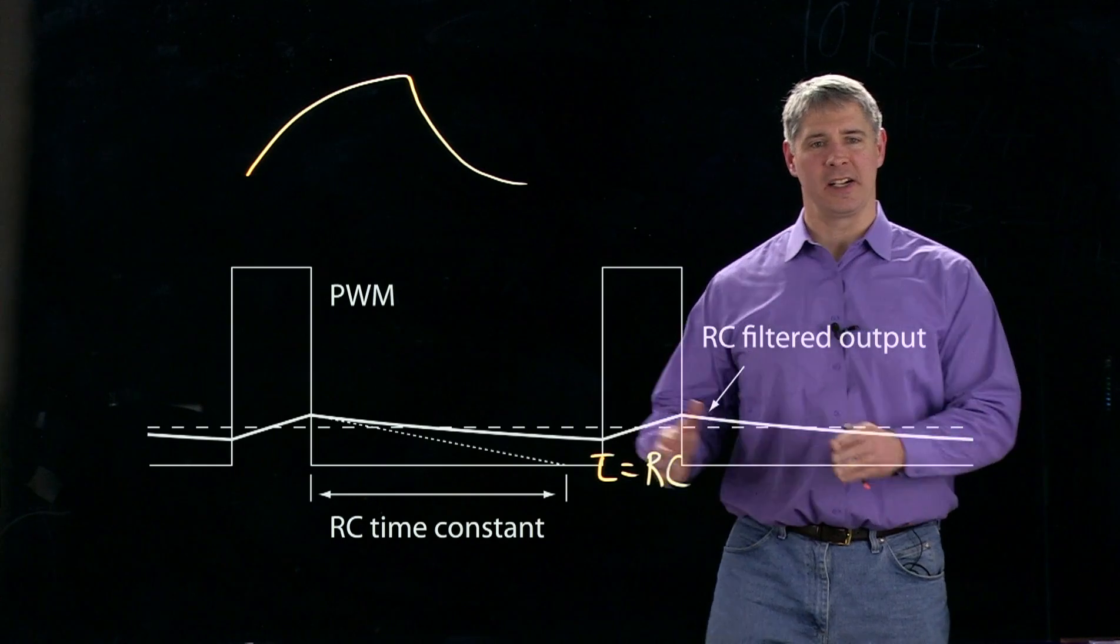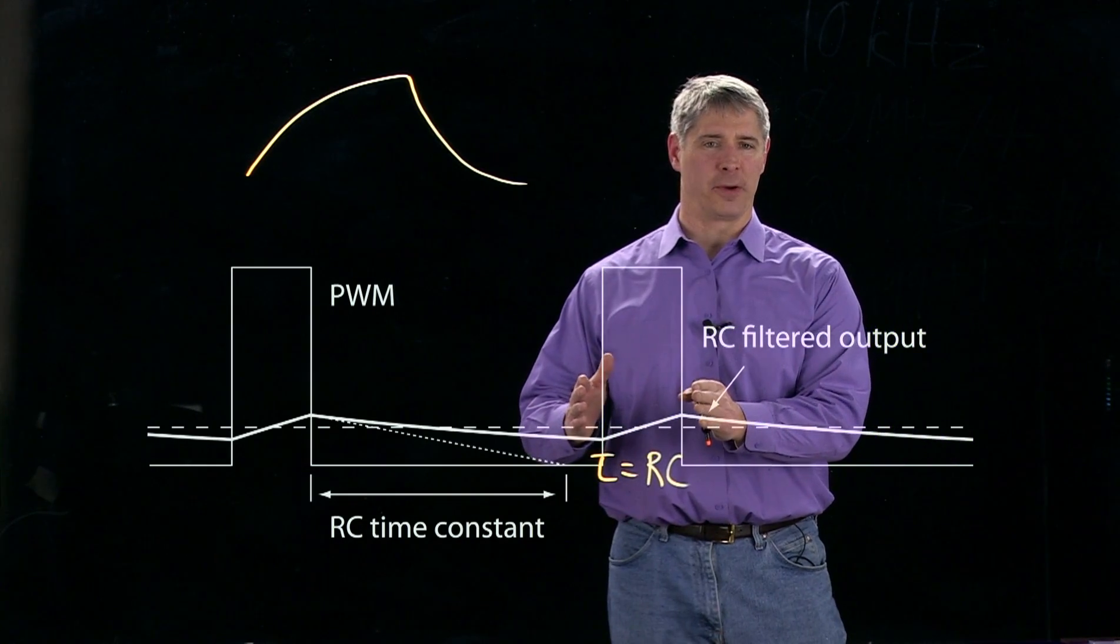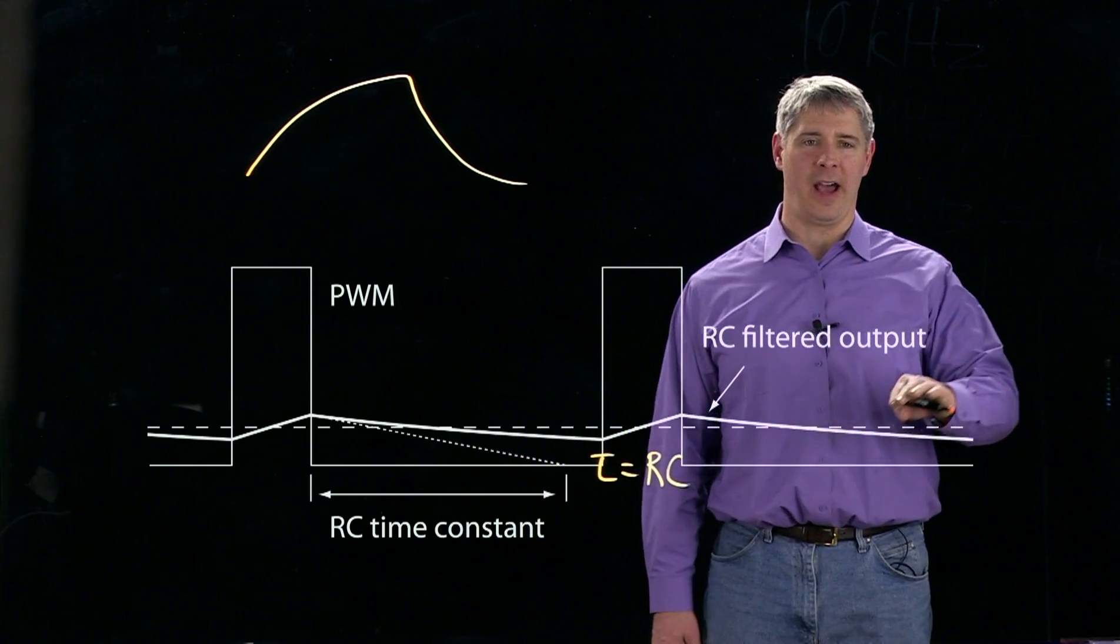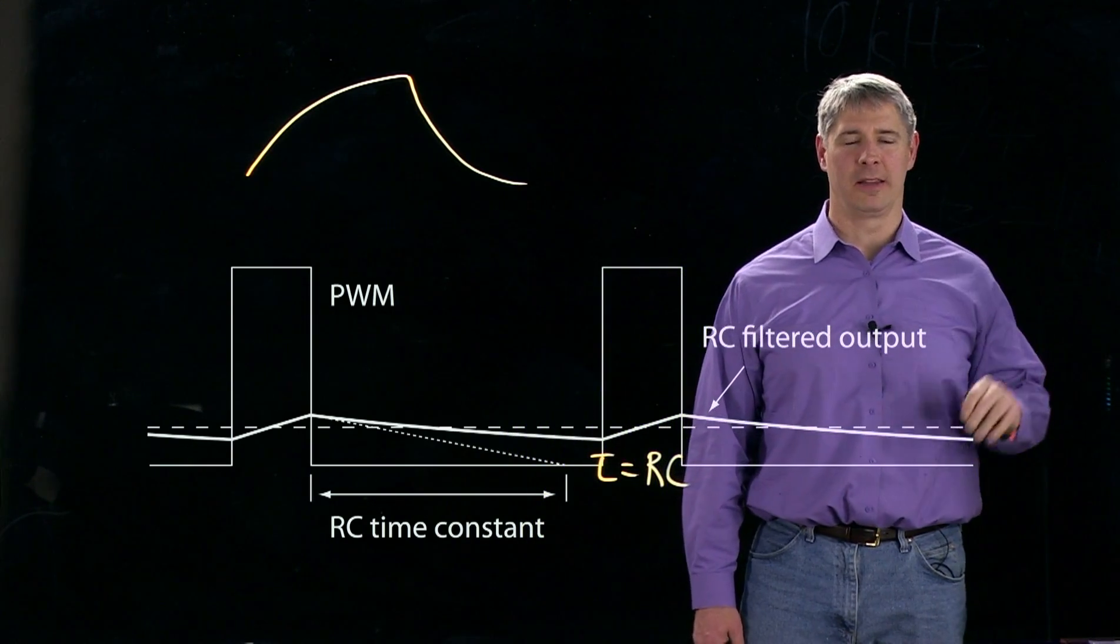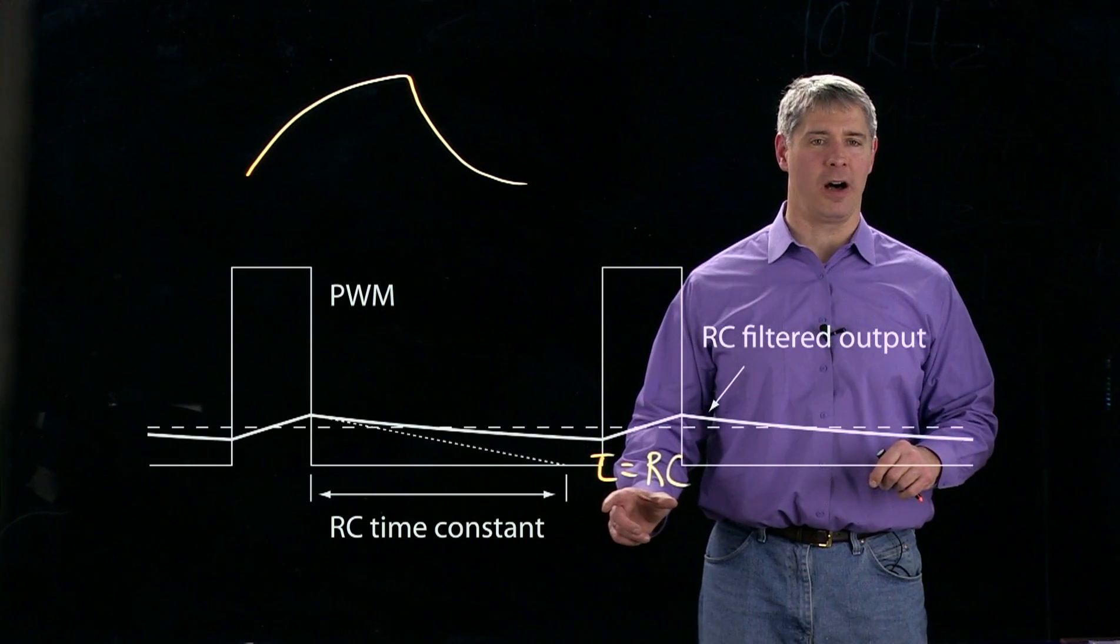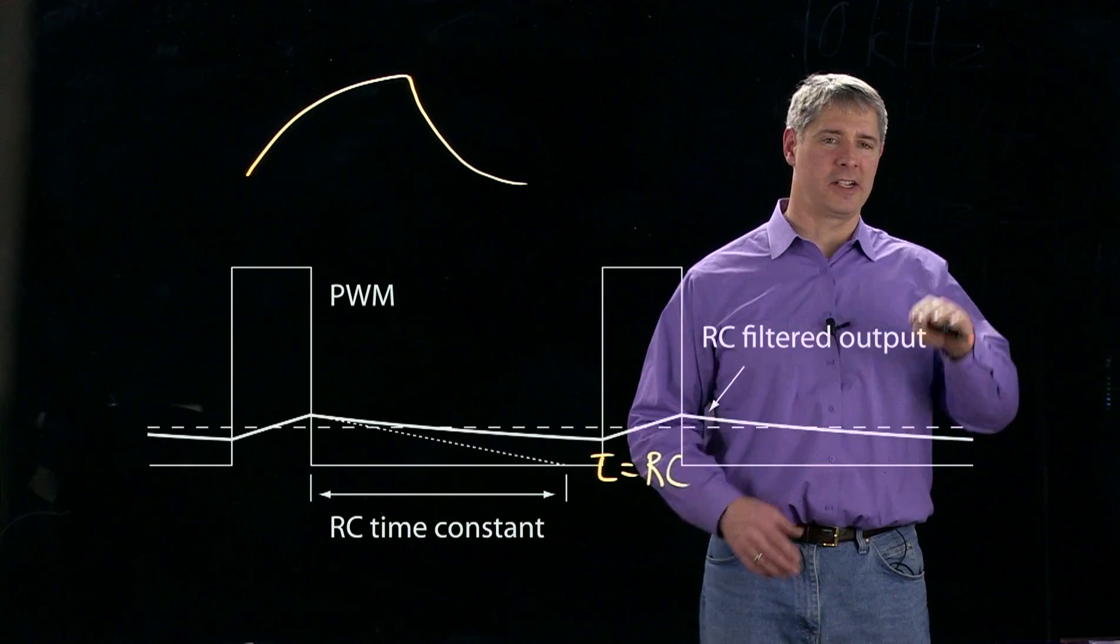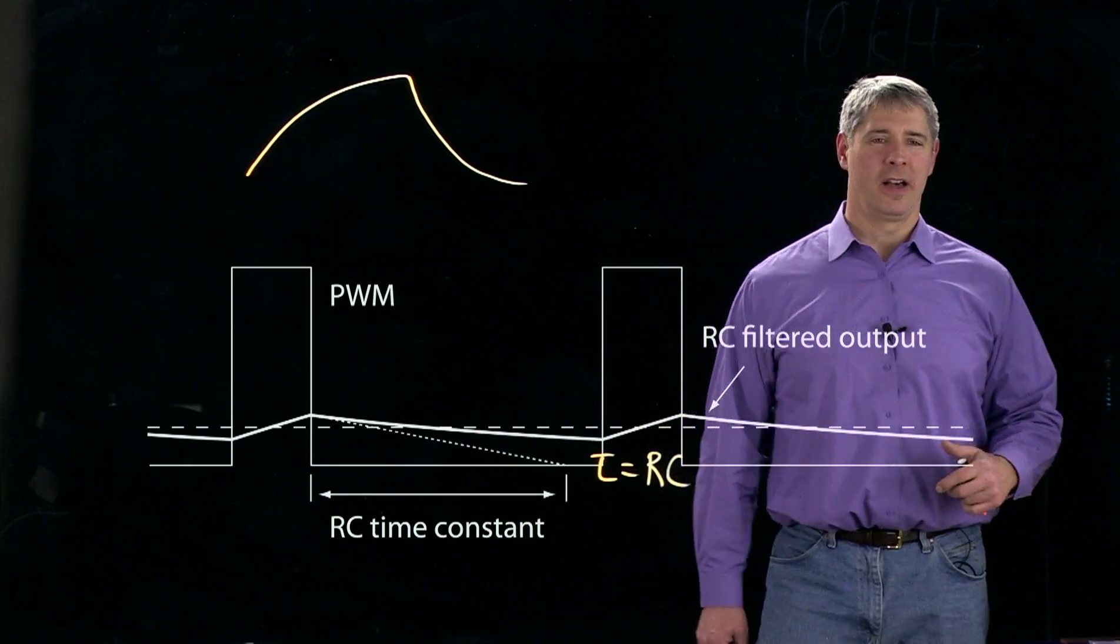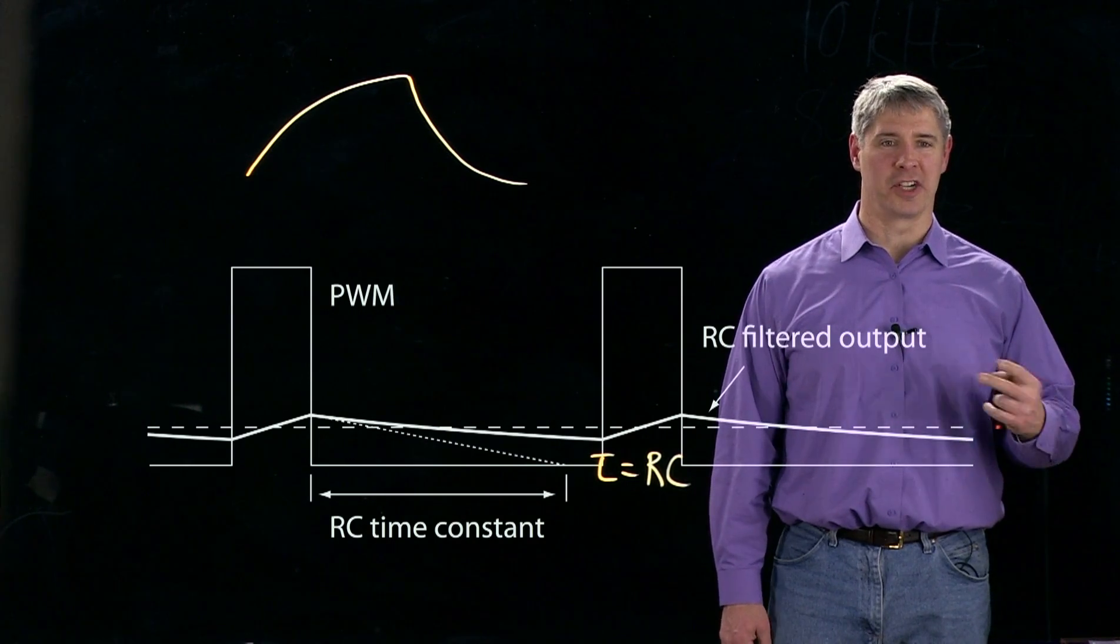But the problem is if I want to change the average value, say from 33% up to 66%, it takes a while for that average value to rise up to that desired output. On the other hand, if we make the time constant small, then we can more quickly change our average output values. But the problem is that we get more jitter because we have a smaller time constant for the charging and discharging.